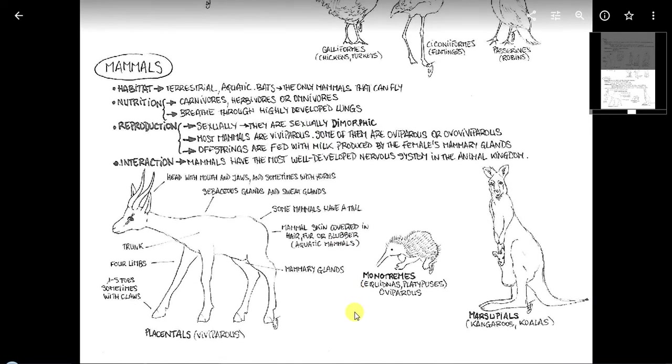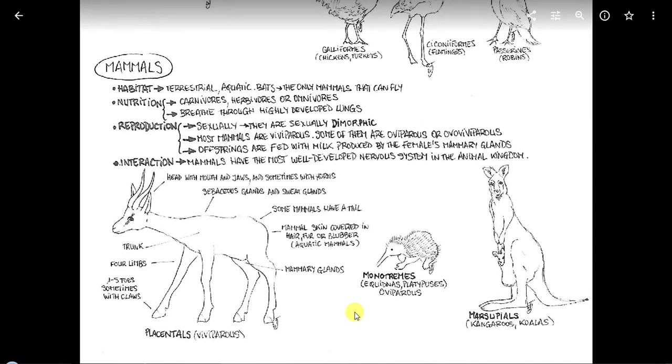Y vamos a terminar con los mamíferos. Mammals. Habitats: Terrestrial, aquatic, but bats are the only mammals that can fly. Nutrition: Carnivores, herbivores, or omnivores. Brought through highly developed lungs. Reproduction: Sexually, they are sexually dimorphic. Most mammals are viviparous, but some of them are oviparous or ovoviviparous. Offsprings are fed with milk produced by the female's mammary glands. Interaction: Mammals have the most well developed nervous system in the animal kingdom.